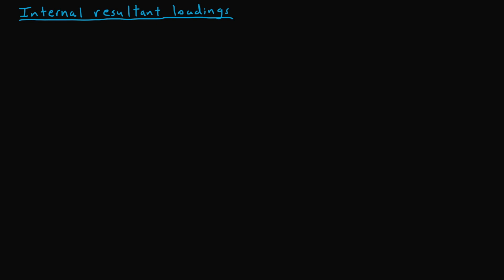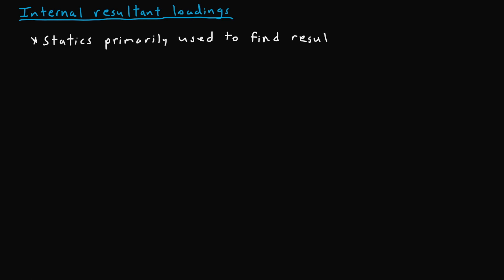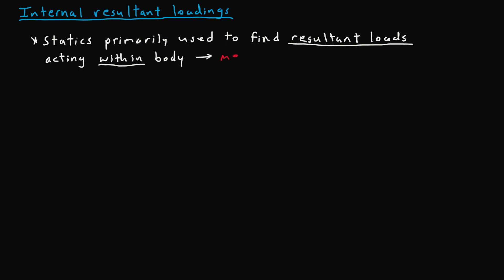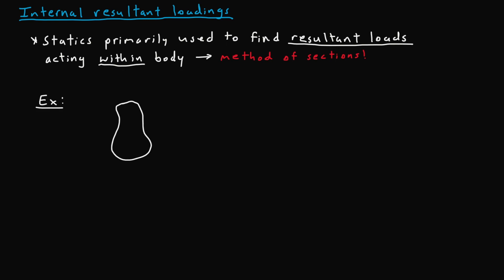Moving on to another major topic: internal resultant loadings. An important point is that statics is primarily used to find resultant loads acting within a body — the keyword being within, referring to any internal activity occurring in a body. To find these, we use what's called the method of sections, which is very similar to a topic covered in statics.